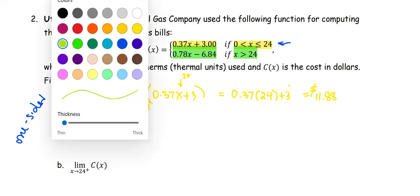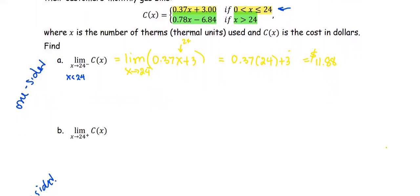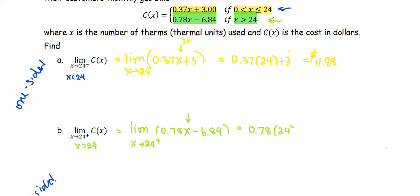Next, we move to part B, where x approaches 24 from the right. That means x is slightly greater than 24. If x is slightly greater than 24, the function is defined as the one highlighted in green. This is the limit of 0.78x minus 6.84 as x approaches 24 from the right. Again, this is a polynomial function, so we find the limit the same way: 0.78 multiplied by 24 minus 6.84, which comes out to $11.88 — the same as the left-sided limit.